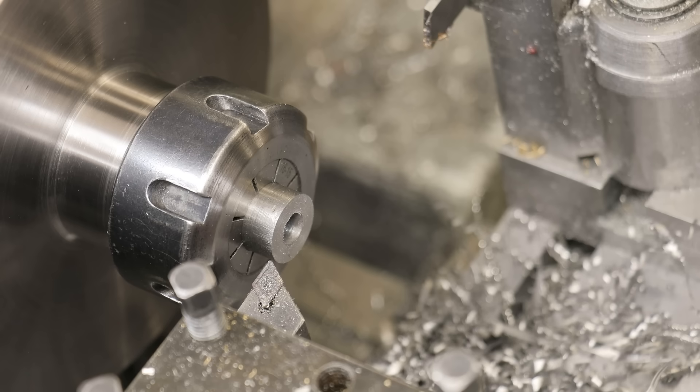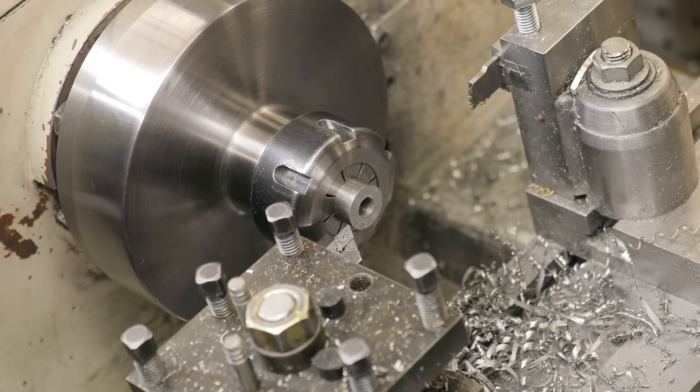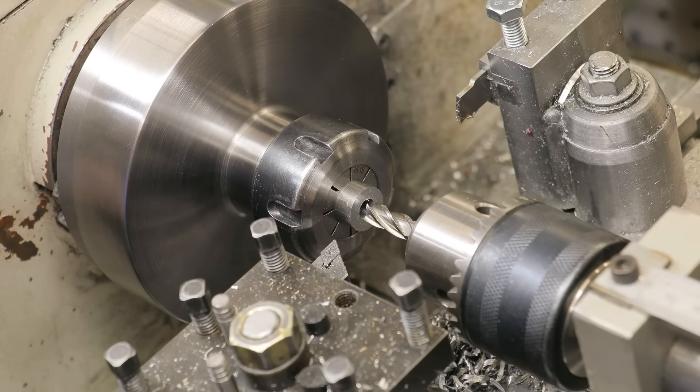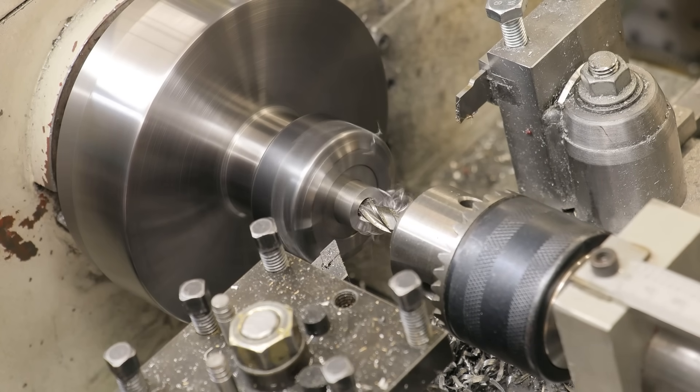Now I was going to ream it to take it to 8mm exactly, but I can't find my 8mm ream at the moment, so what I'll do instead is simply use an 8mm end mill. It may not give us the same results as a reamer, but it does get pretty close.